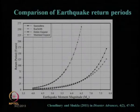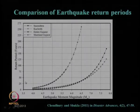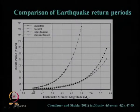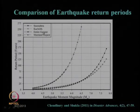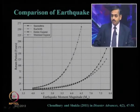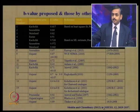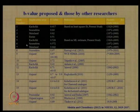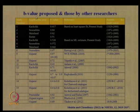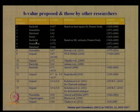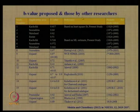Let us compare earthquake return periods for different regions of Gujarat. Return period in years versus earthquake magnitude MW ≥ 4 is plotted for Saurashtra region, Kach region, entire Gujarat, and mainland Gujarat. The details about this study can again be obtained from the referenced journal paper.